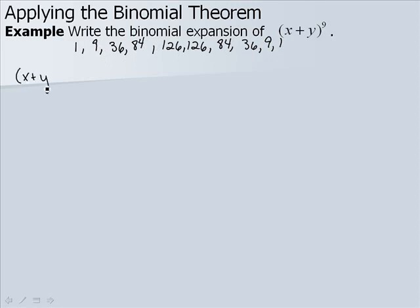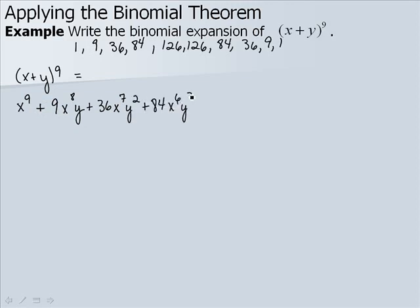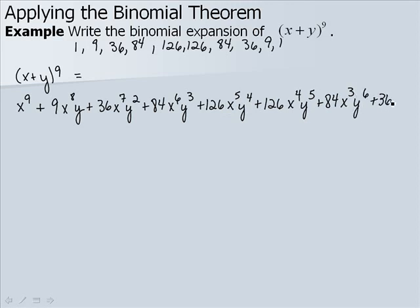So our expansion of x plus y to the 9th is: x to the 9th, plus 9 x to the 8th y, plus 36 x to the 7th y squared, plus 84 x to the 6th y cubed, plus 126 x to the 5th y to the 4th, plus 126 x to the 4th y to the 5th, plus 84 x to the 3rd y to the 6th, plus 36 x squared y to the 7th, plus 9 x y to the 8th, plus y to the 9th.